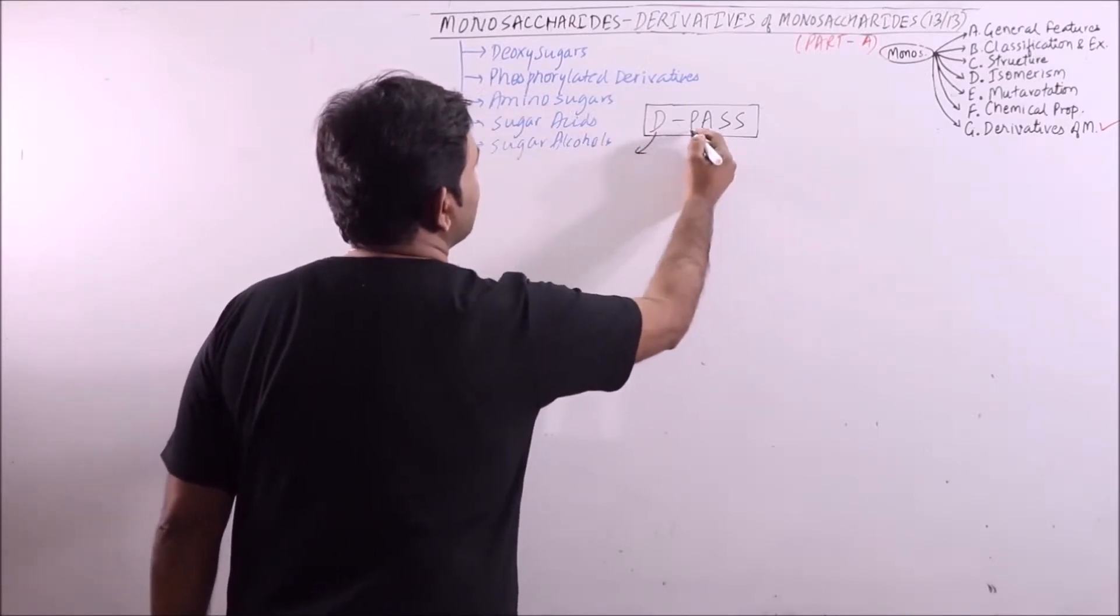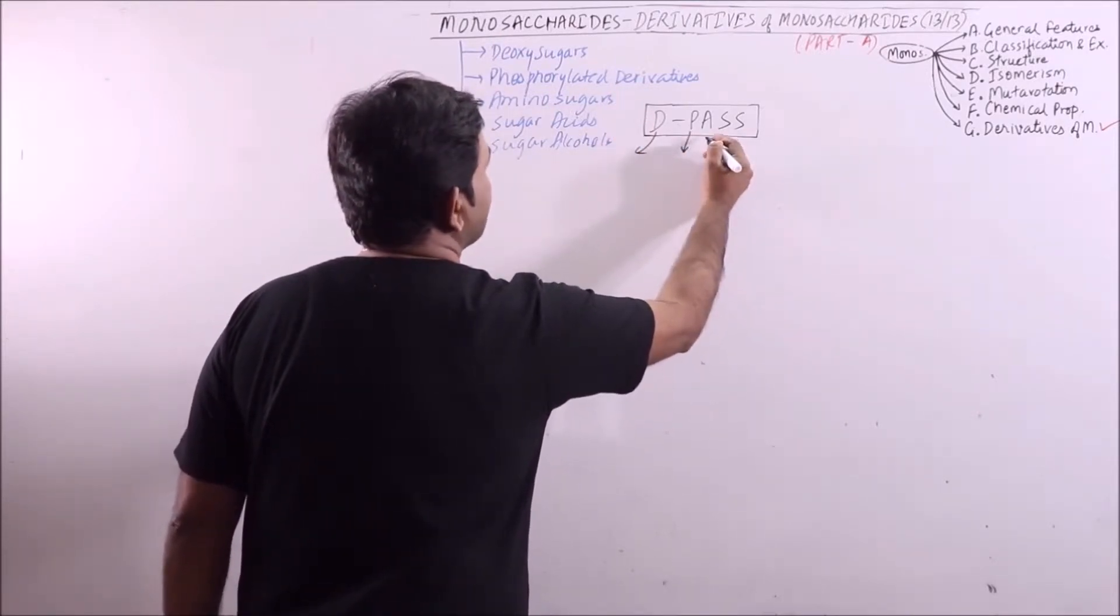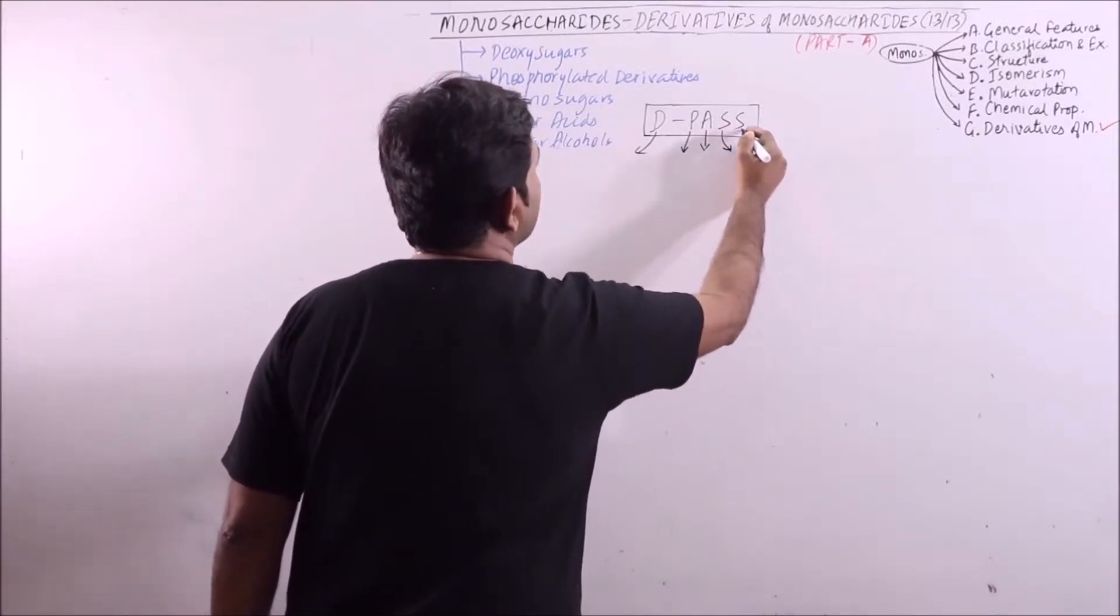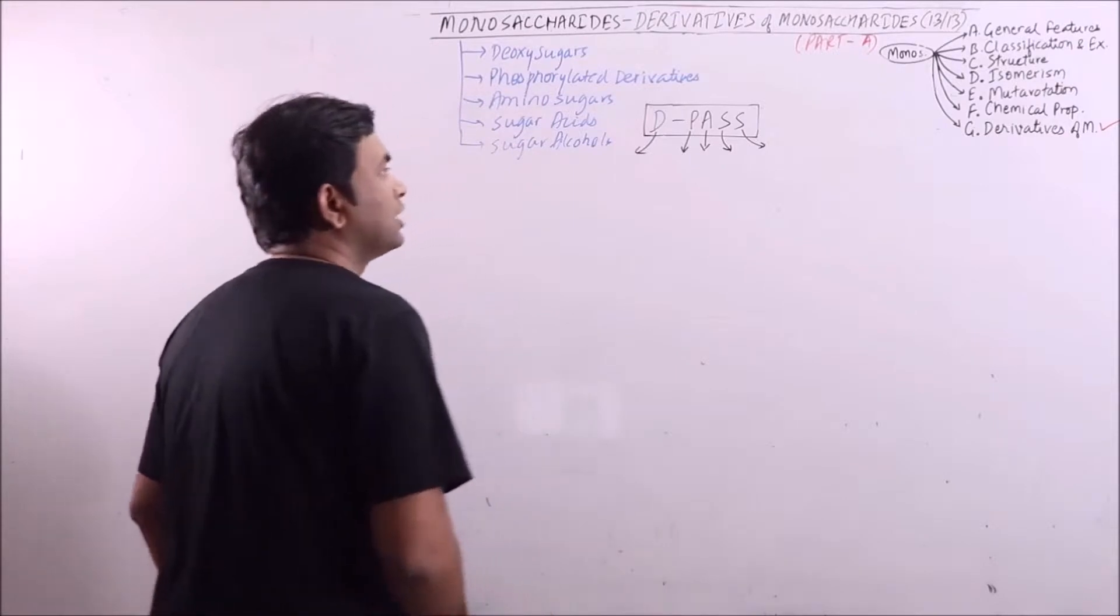D means deoxysugars, P phosphorylated derivatives, A aminosugars, S sugar acids, and S sugar alcohols.